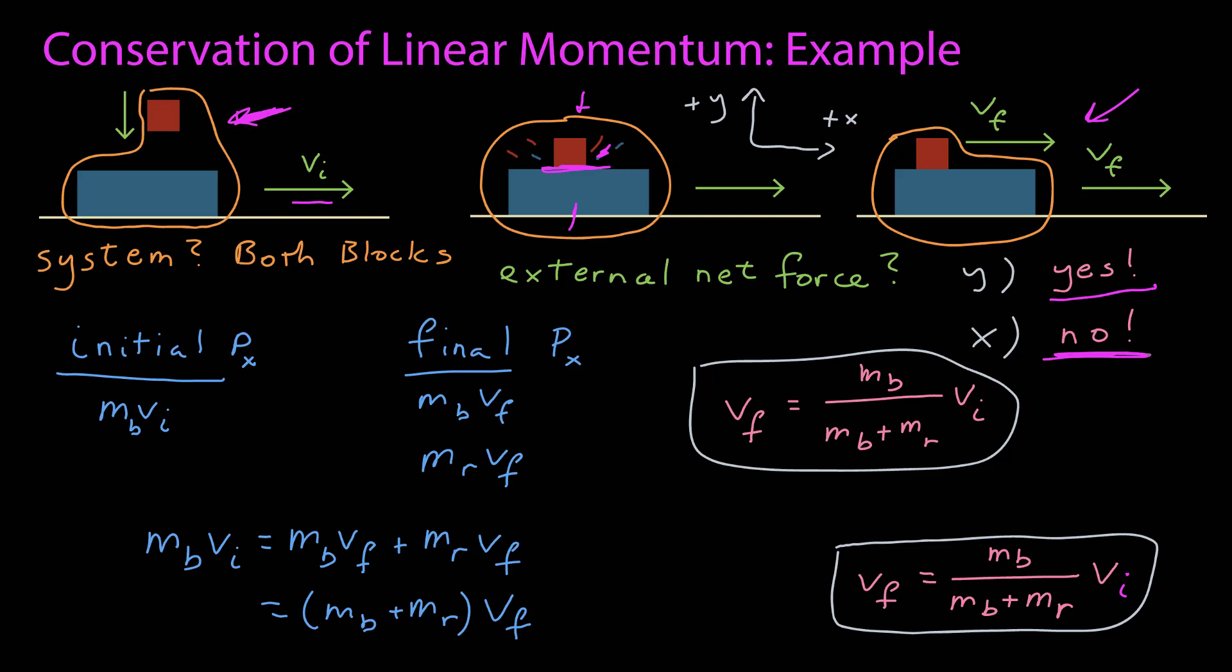Second, this was so powerful because we didn't have to know anything that was going on about the forces internal to the system. When we solved this before, we spent all of our time on these internal forces, the friction between them and the effects that that had. If there's no net external force, you can apply conservation of linear momentum to the system, and you don't have to know anything about the internal forces.